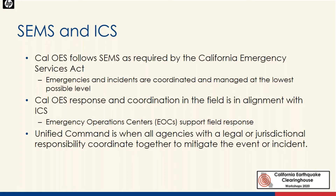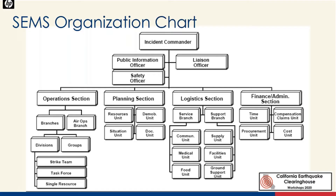Unified command is when all agencies with legal and jurisdictional responsibility coordinate together to mitigate — this is really important for large events. As a clarification, you'll find earthquake and tsunami technical specialists in the planning section. The California Geological Survey would be in the State Operations Center as both a state agency representative and a technical specialist in the planning section. The earthquake clearinghouse is not part of incident operations, but is an off-site physical location that coordinates with and reports to the CGS agency rep and the earthquake technical specialist in the State Operations Center.